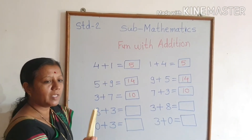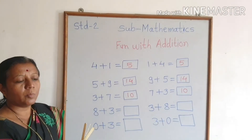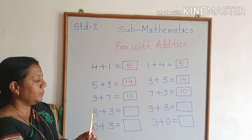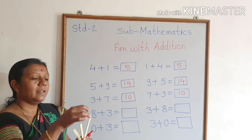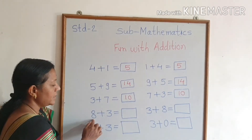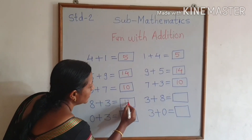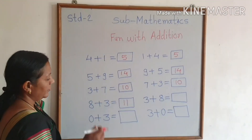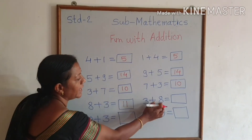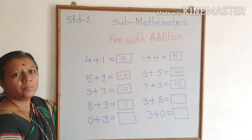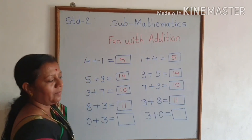How many sticks did I take? 3. Correct. Now we need to count forward from 8: 9, 10, 11. So 8 plus 3 is equal to 11. Now tell me, 8 plus 3 is equal to 11. And 3 plus 8 is equal to how many? Correct, 11. 3 plus 8 is equal to 11.